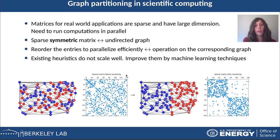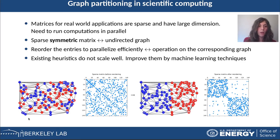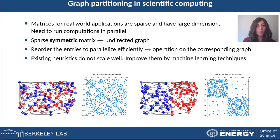For example, if we consider this sparse matrix here, the rows and the columns correspond to the vertices of the corresponding graph, and the entries of the matrix correspond to the edges of this graph.